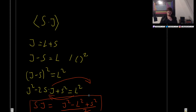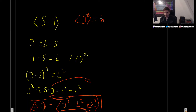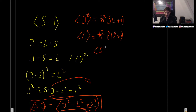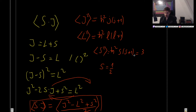So we need the expectation values of J squared, L squared, and S squared. The expectation value of J squared is ℏ² times j(j+1). The expectation value of L squared is ℏ² times l(l+1). The expectation value of S squared is ℏ² times s(s+1). Since we are dealing with electrons, s equals one half, so s(s+1) equals three over four.